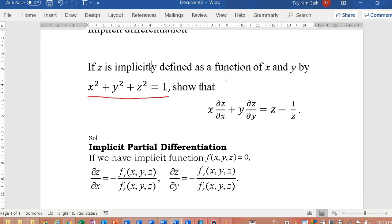Recall for implicit partial differentiation. If you have the implicit function here, this is f = 0.